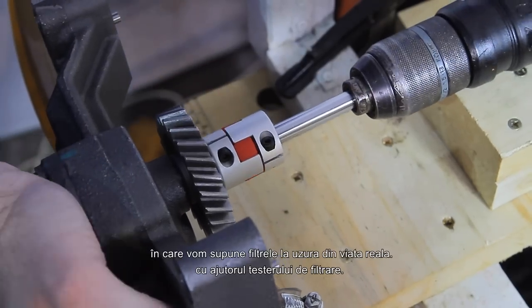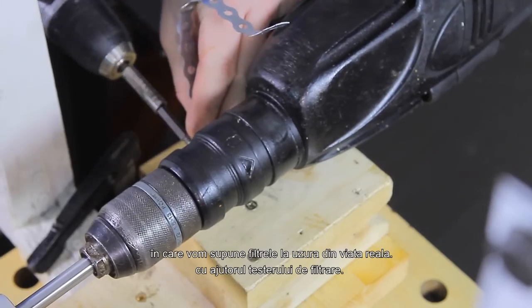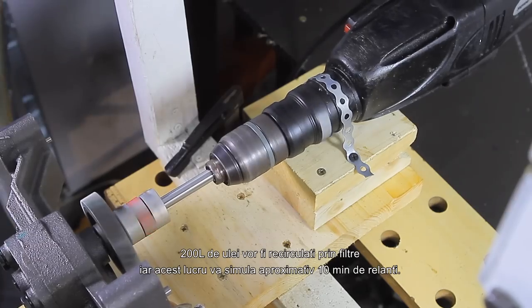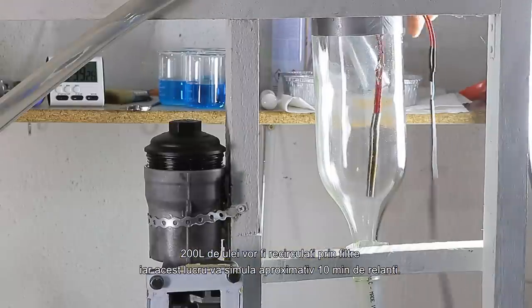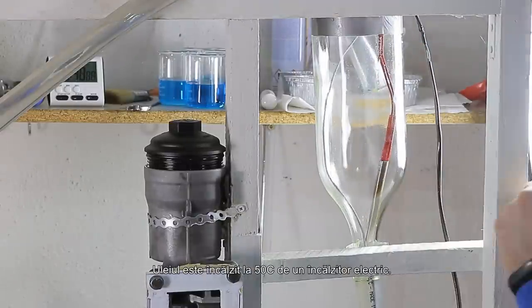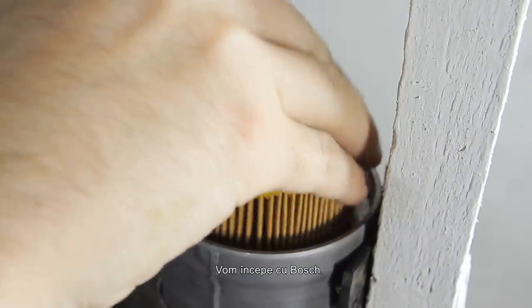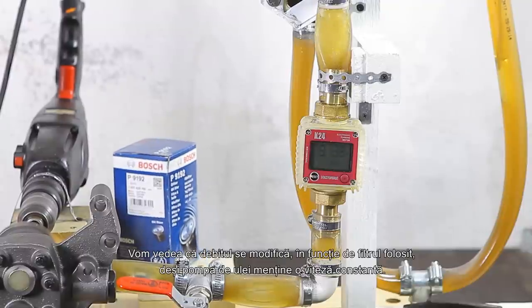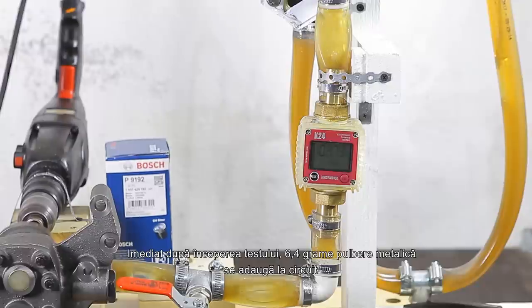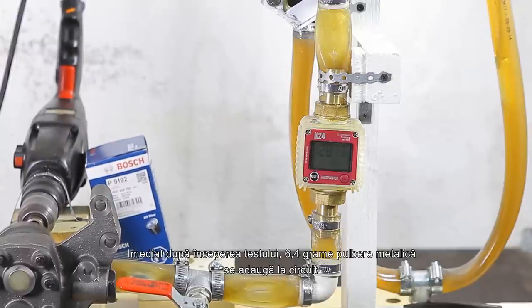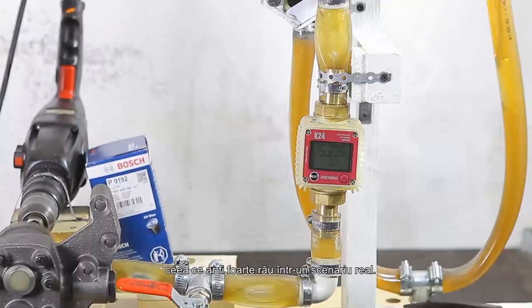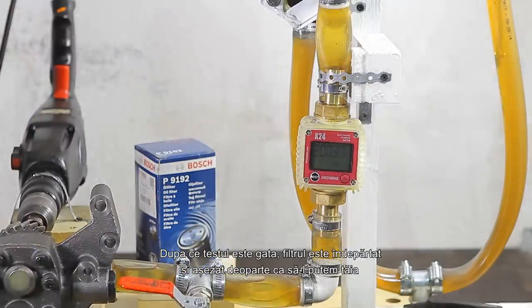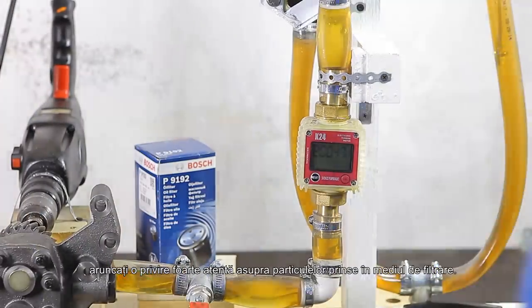Next is the filtration test in which we will subject the filters to real world use with the help of my contraption. 200 liters of oil will be cycled through the filters and this will simulate about 10 minutes of engine idle. The oil is heated to 50 degrees Celsius by an electrical heater and we will start with Bosch. We will see that the flow rate changes depending on the filter's use, although the oil pump maintains a constant speed. Immediately after the test is started, 6.4 grams of metal powder is added to the circuit, which would be very bad in a real scenario. Once the test is finished, the filter is removed and set aside so we can cut it and take a very close look at the particles trapped in the media.